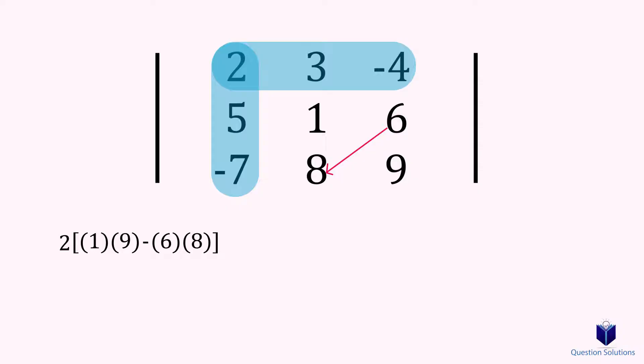We will now cover the top row and the middle column. When we do this, the intersecting number becomes 3. Something to remember which is very important is that every time we switch the column we cover, we have to change the signs. Since the beginning was positive, the next is negative, so our intersecting number becomes negative 3.